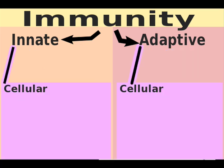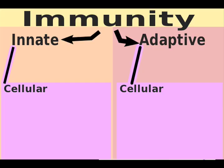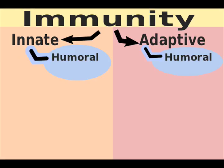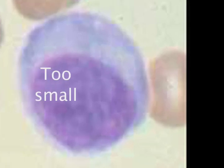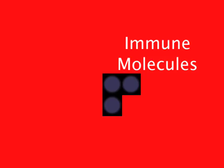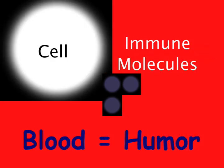The cellular component involves big cells you can see under a microscope. Too small to be easily seen under a microscope are the individual proteins that are inside cells and can get released to fight infection. These immune molecules float outside the cell in your body's fluids or humors.